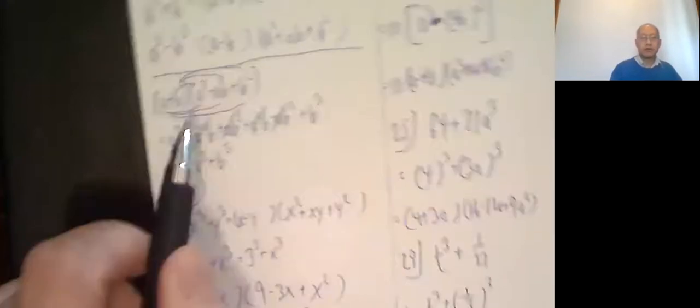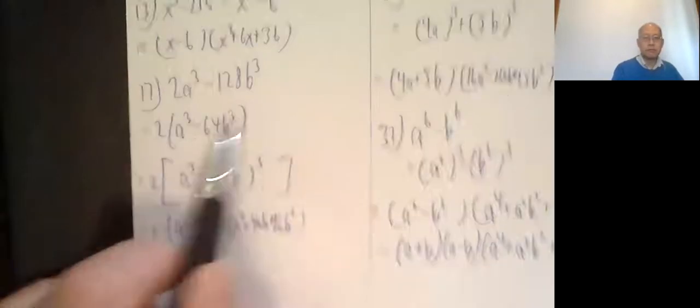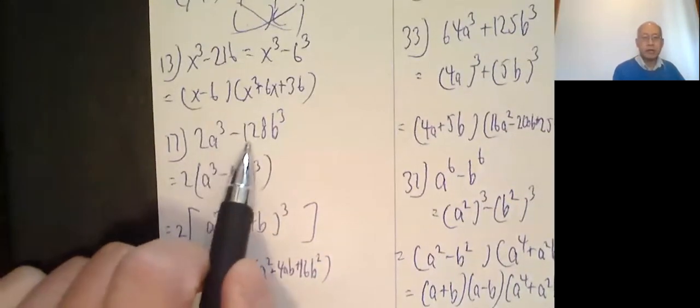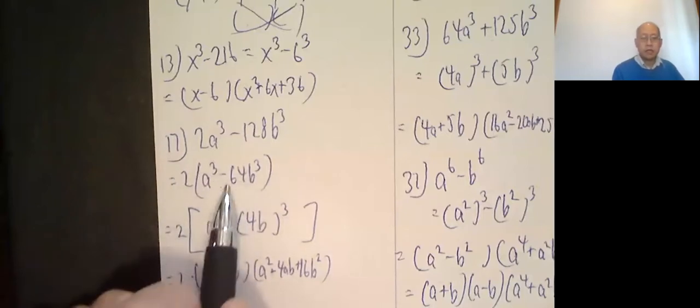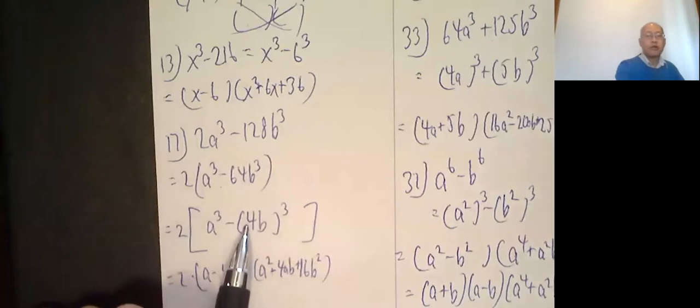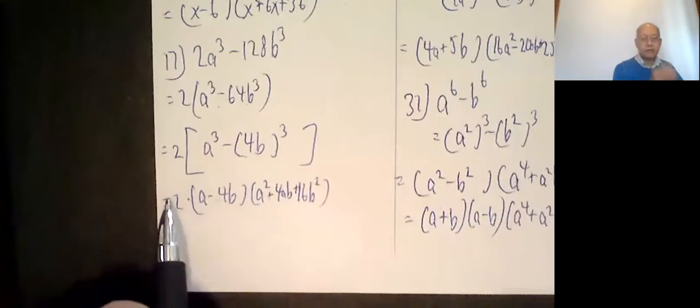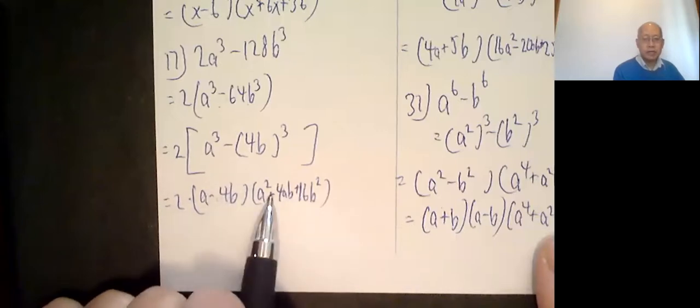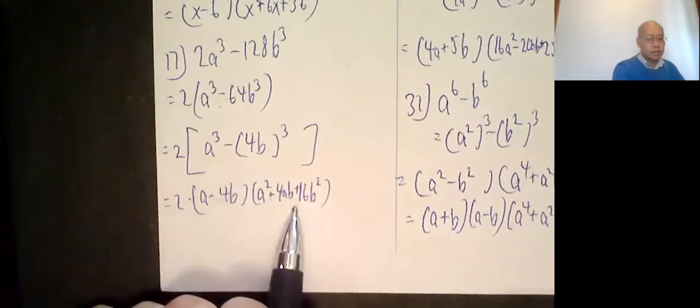Notice there's a separate formula for the sum of cubes and the difference of cubes. Sum difference. The 2a cubed minus 128b cubed. Factor out the 2. a cubed minus 64b cubed. 64b cubed is 4b quantity cubed. So leave the 2 alone. a minus 4b. a squared plus 4 times a times b plus this thing squared. What is 4b squared? 16b squared.